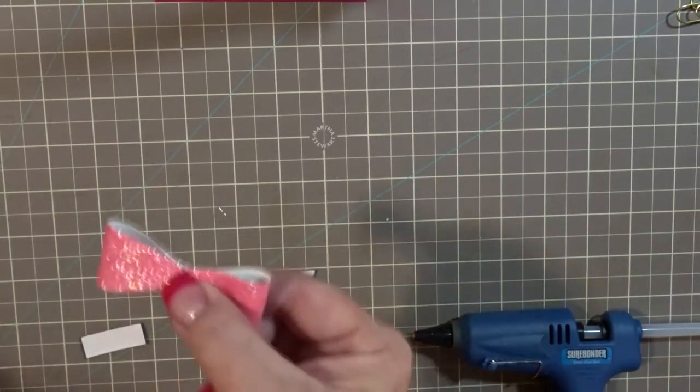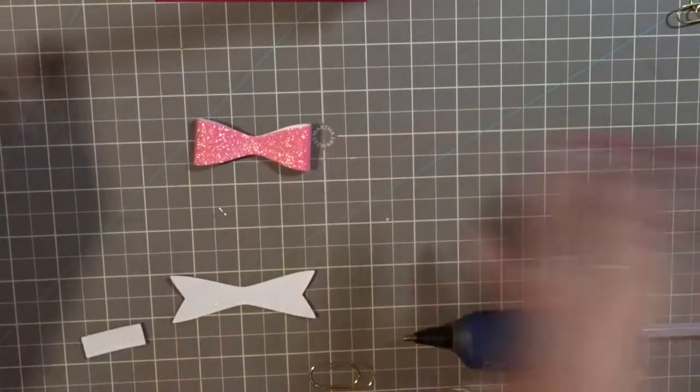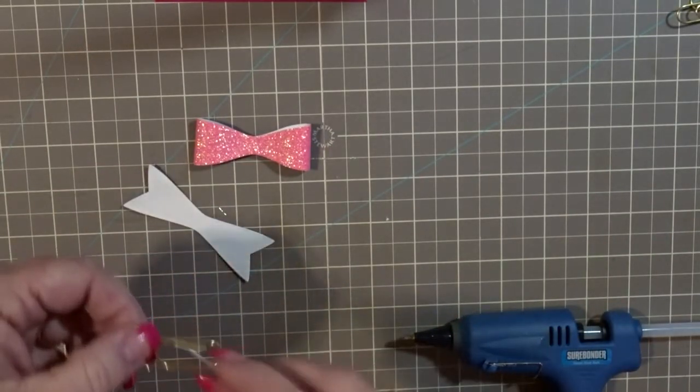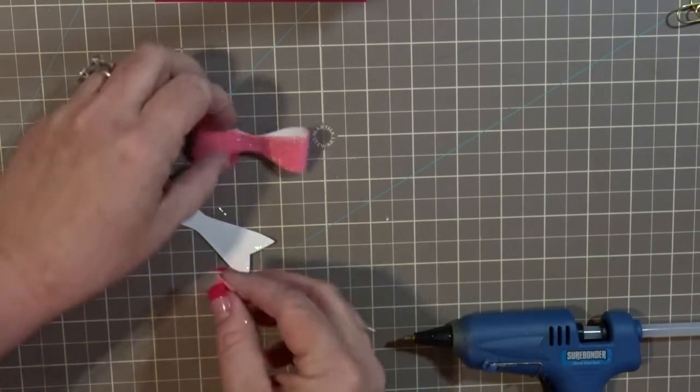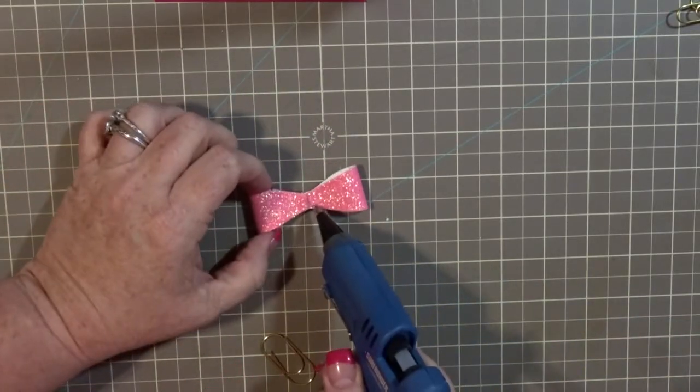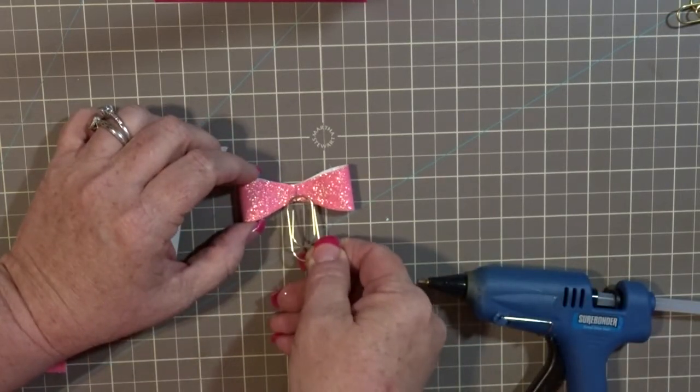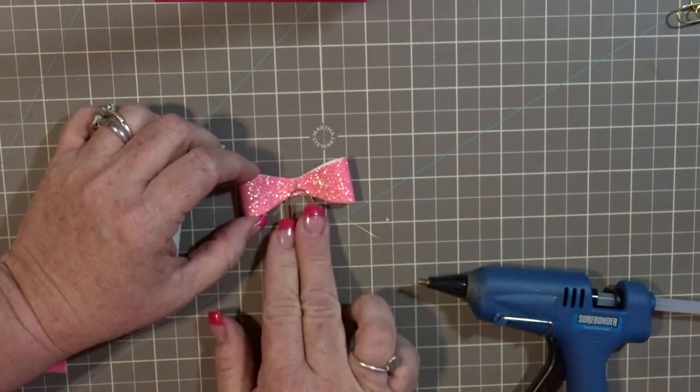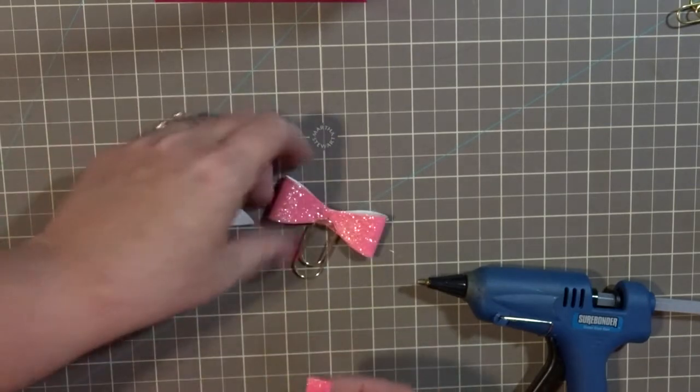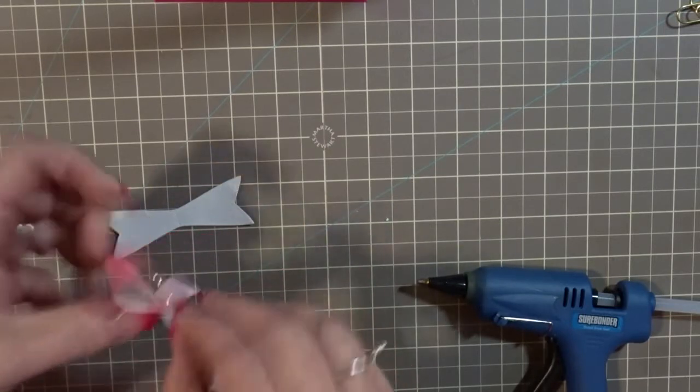So you just put your bow together, however you like your bow, just do it however you like to do it. If you like it puffy, make it puffy. If you like it not puffy, don't make it puffy. It's really just your personal preference. And so I have been putting a little bit of glue back here and putting the paper clip back here just so it's kind of stuck to that a little bit and then running the little decoration piece through.